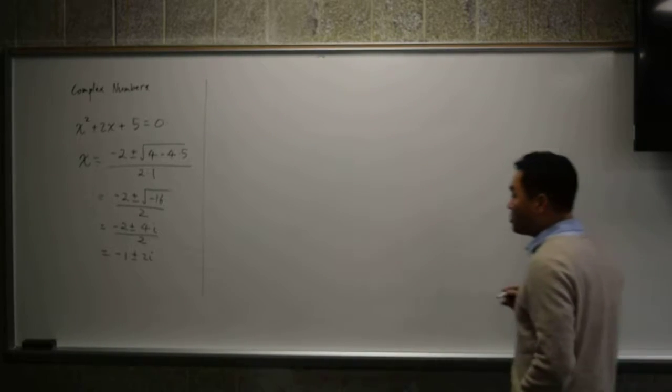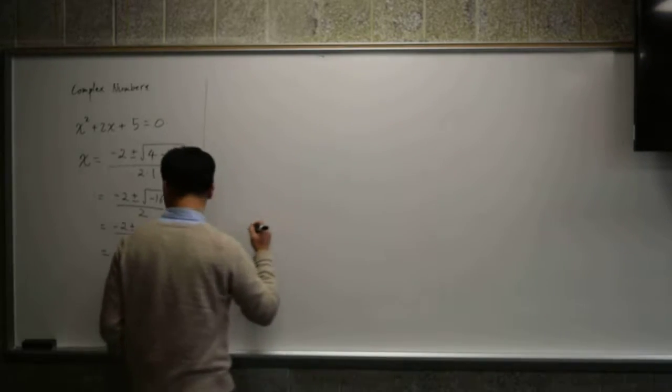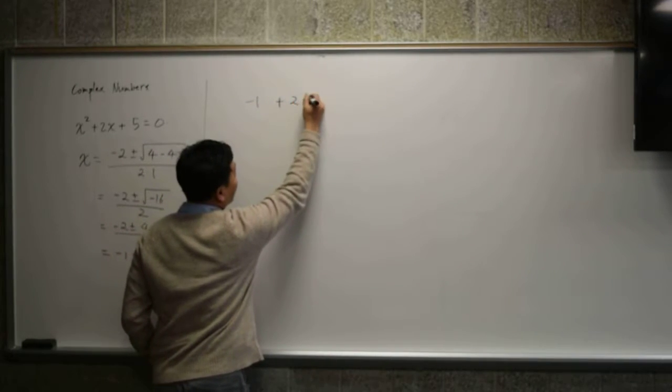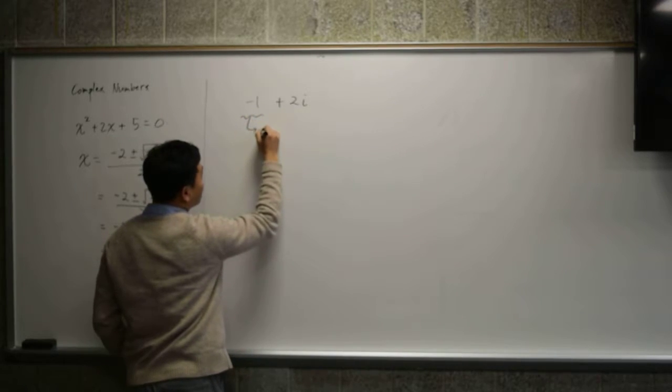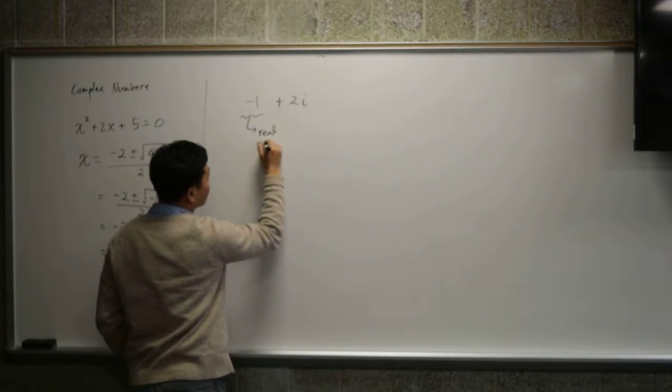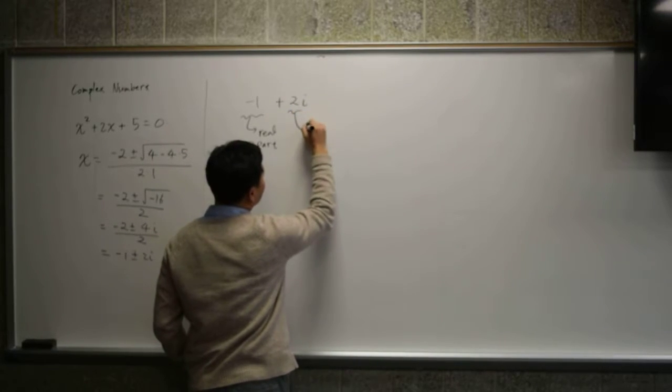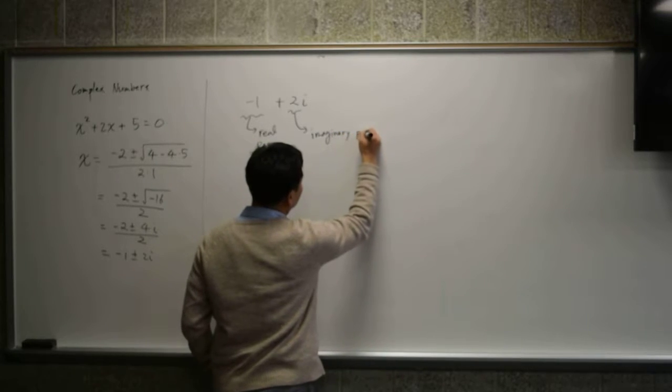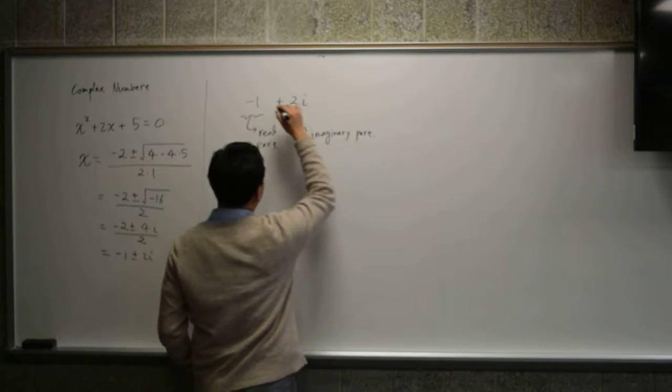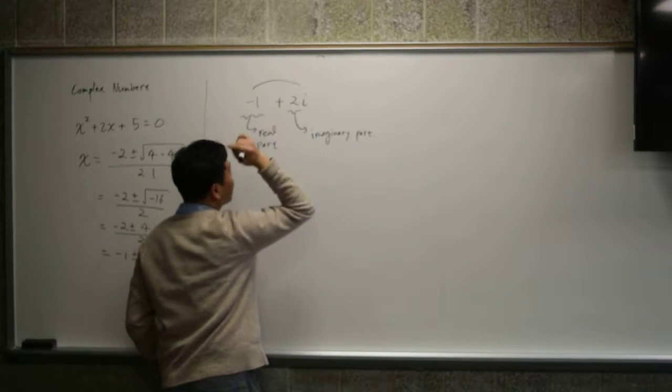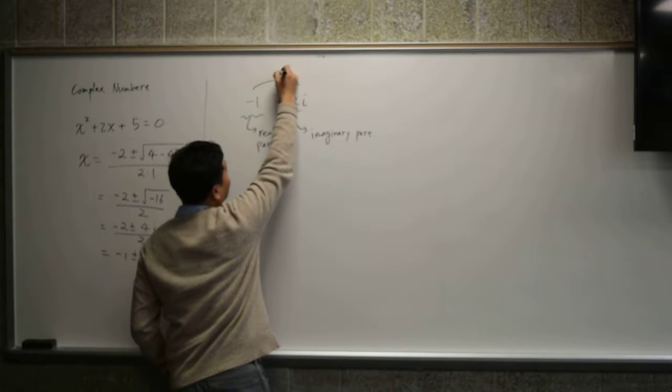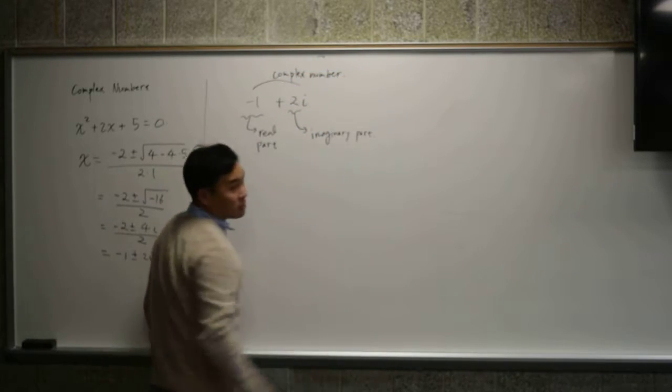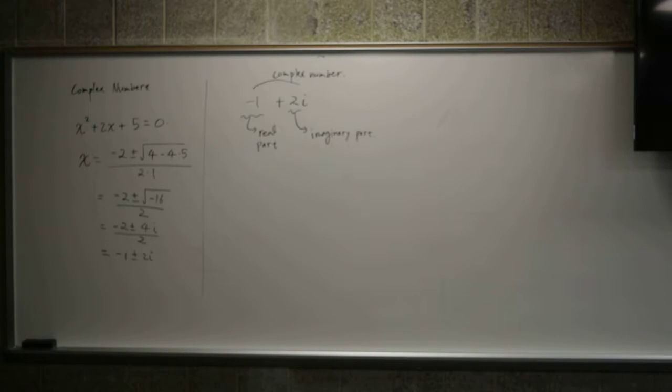So how do you multiply such numbers? By the way, if you have negative 1 plus 2i, this part is called the real part. And this part is called the imaginary part. And any number that has an imaginary part is called a complex number. So a complex number is made up of a real number and an imaginary number.